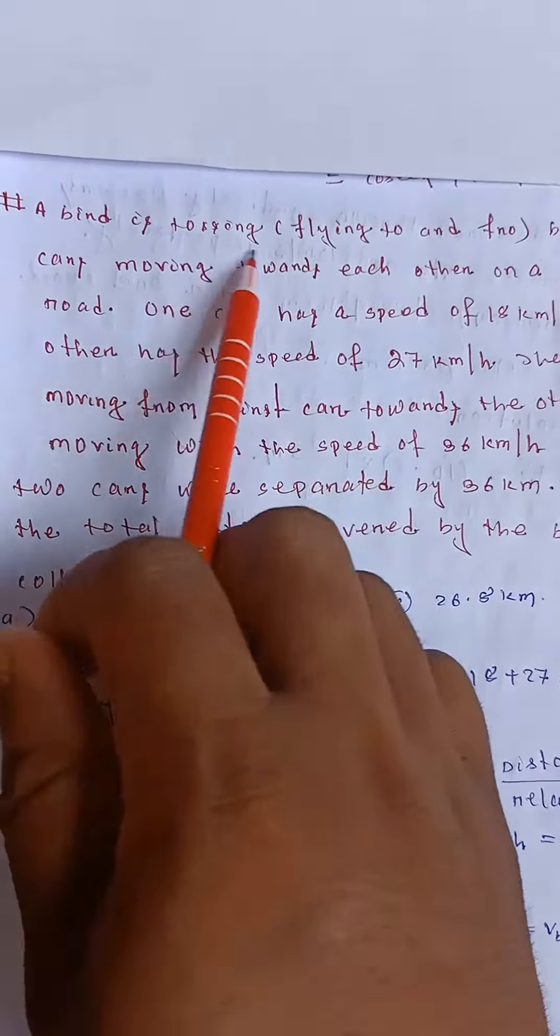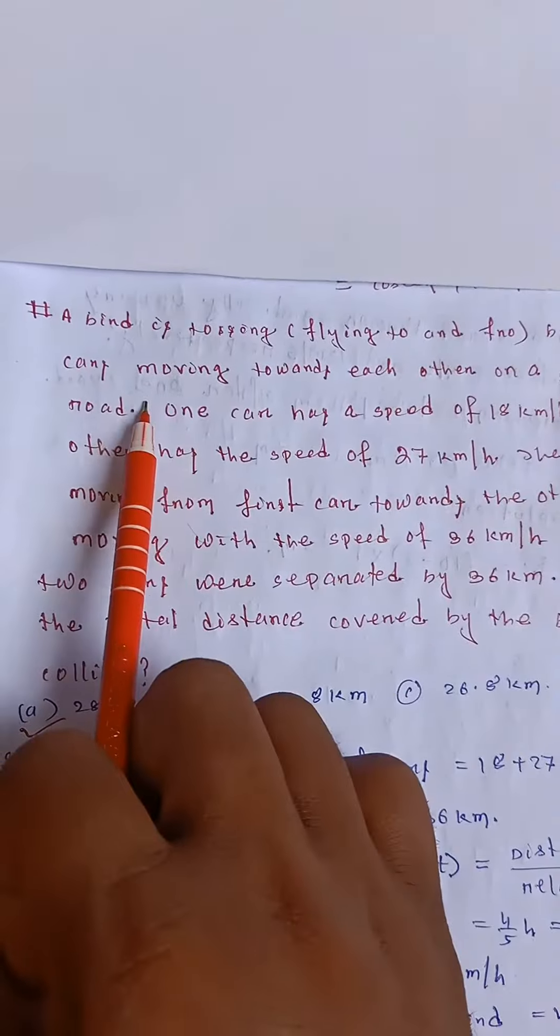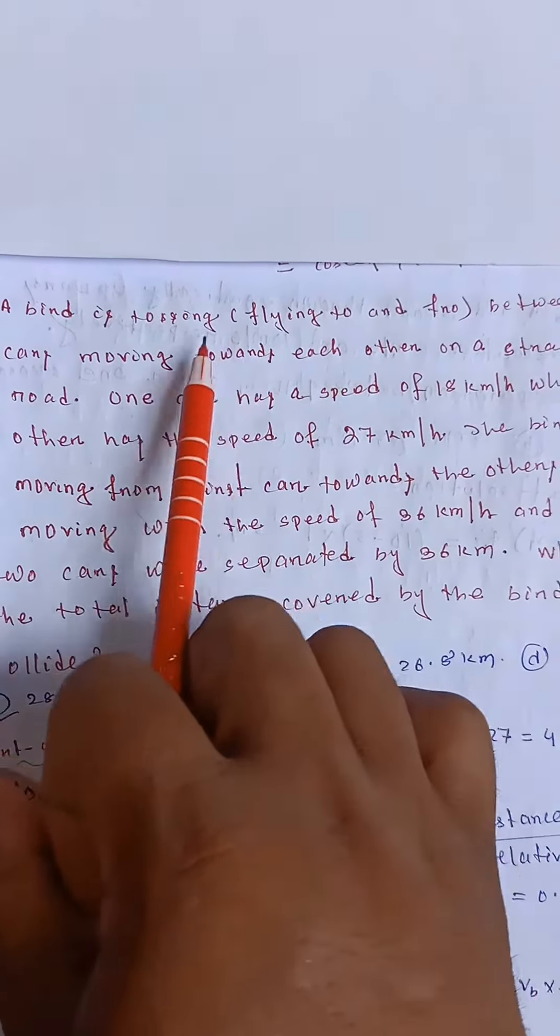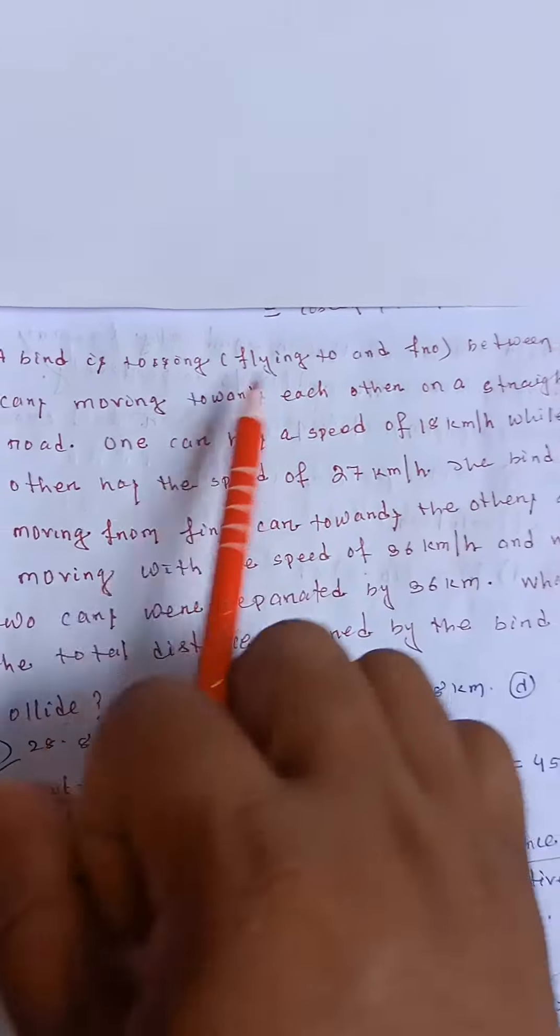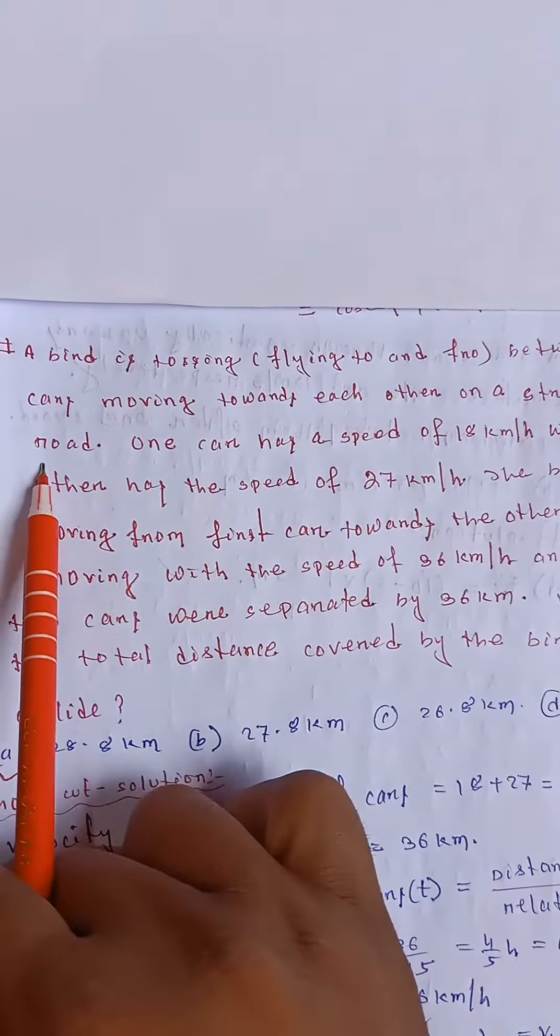A bird is tossing. Tossing means flying to and fro between the two cars. A bird is tossing that means flying to and fro between the two cars moving towards each other on a straight road.